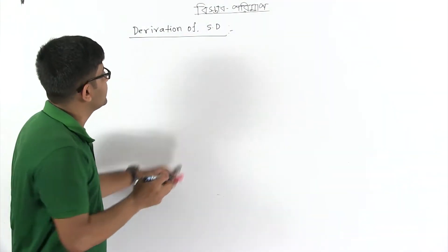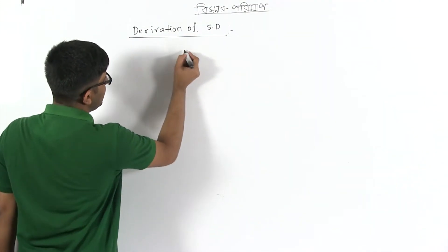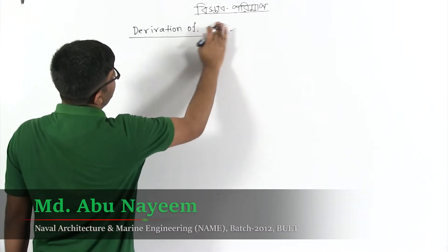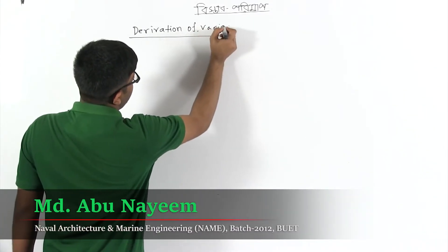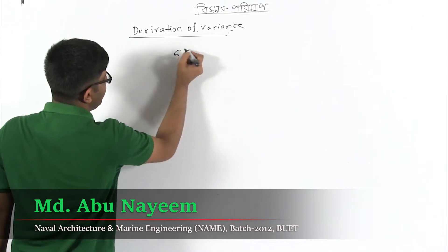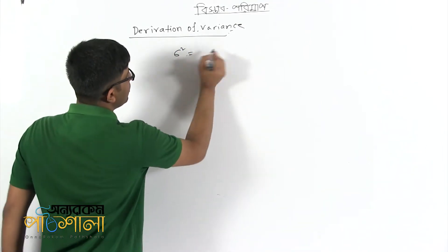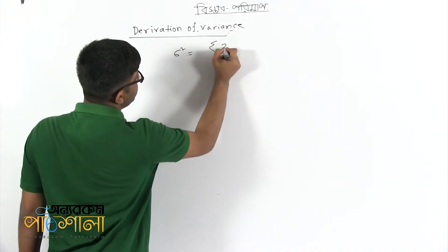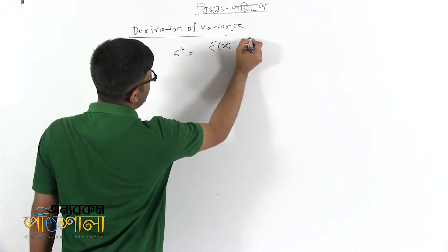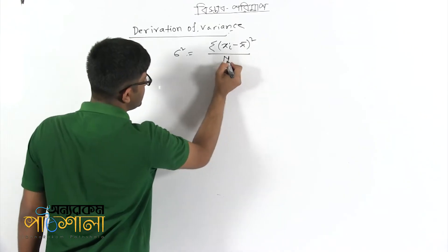For the deviation and variance, this is the sigma squared equation. We have the summation of xi minus x bar whole square divided by n. This is what we have done.